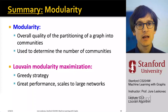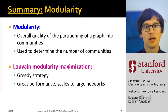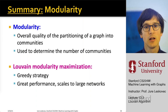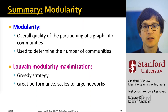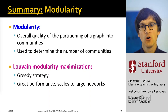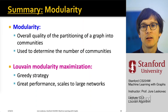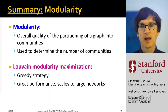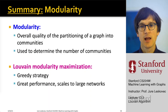To summarize: we defined the notion of modularity, which gives the overall quality of partitioning a graph into communities. We talked about the Louvain algorithm for modularity maximization — a greedy strategy where we start with every node in its own cluster, then move nodes between clusters so that overall modularity keeps increasing. After no more moves are possible, we join clusters into supernodes and repeat the clustering, yielding a nice hierarchical community structure. Louvain works really well in practice, scales to large networks, and is widely used.